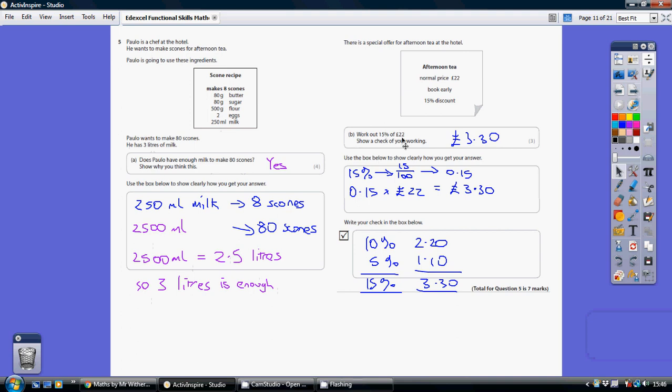Part B. Work out 15% of £22. 15% means 15 out of 100. And if you do 15 divided by 100 on your calculator, you get 0.15.